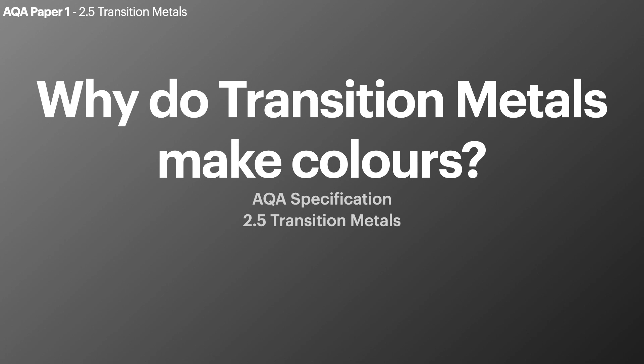Hello chemists and welcome to this episode of Bale's Chemistry. Today we're talking about why do transition metals make colors. This is 2.5 of the AQA A-level specification transition metals. It appears on paper one of your final exams. If you haven't already subscribed, make sure you hit the button below and let's get started.